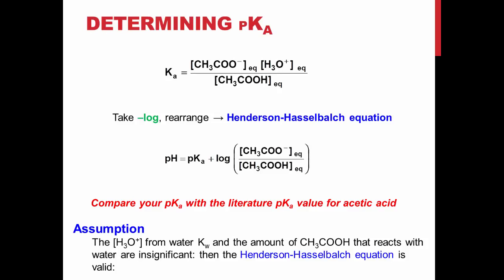Rearranging the pKa expression gives us this equation. Remember that when the concentration of acetic acid and its conjugate base are equal, the log portion of the equation will equal 0, and the pH will be equal to the pKa. Note that in this case we are assuming that the added hydronium from water and the reaction of acetic acid with water are irrelevant.